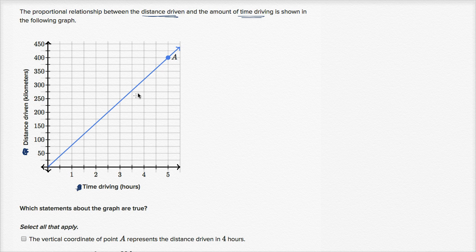We can tell just visually that this is indeed a proportional relationship. How do we know that? The graph goes through the origin — if we have zero time, then we have zero distance. And we can also see that it's a line, a linear relationship. If you have a linear relationship that goes through the origin, you're dealing with a proportional relationship.